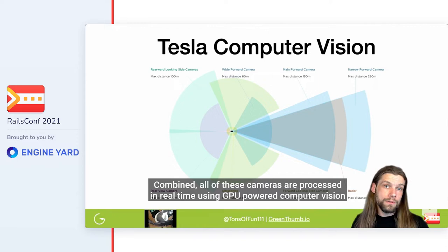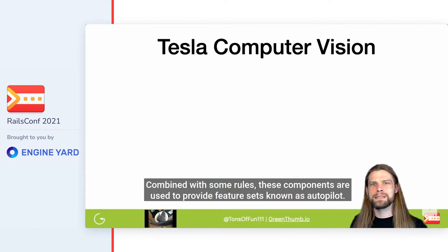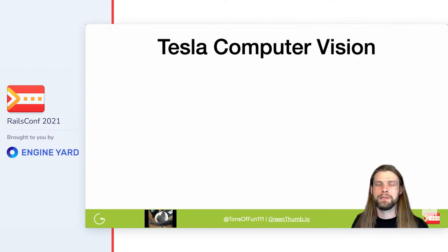Combined, all of these cameras are processed in real-time using GPU-powered computer vision onboard each Tesla to detect lane markers, vehicles, bikes, motorcycles, cones, pedestrians, trash cans, and intersections using neural networks. Combined with some rules, these components are used to provide feature sets known as Autopilot.